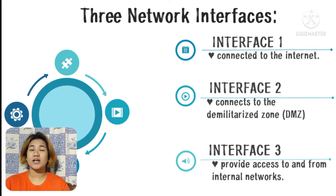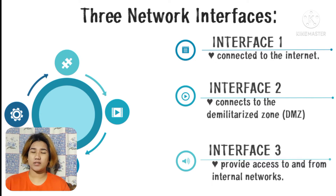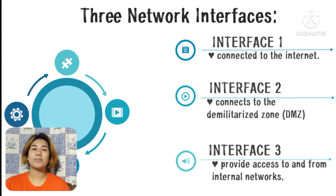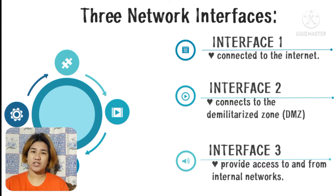There are three network interfaces: Interface 1 is the public interface connected to the internet. Interface 2 connects to the demilitarized zone, or DMZ, to which hosted public services are attached. Interface 3 connects to provide access to and from internal networks.